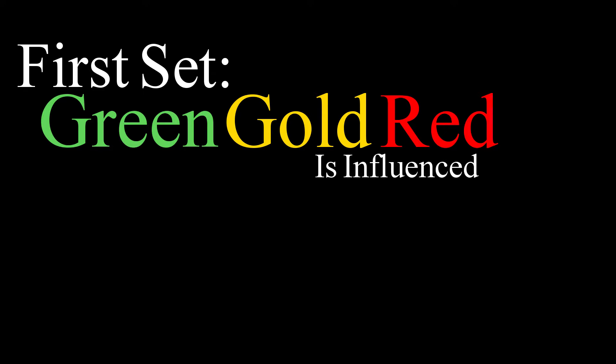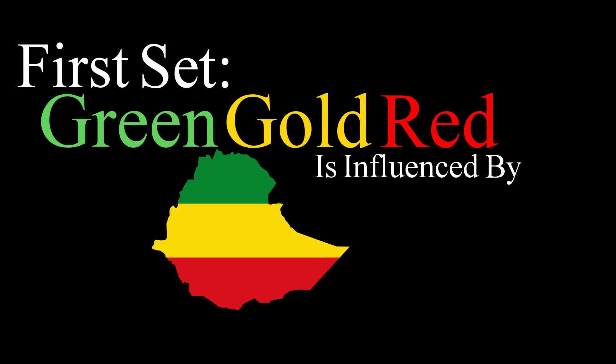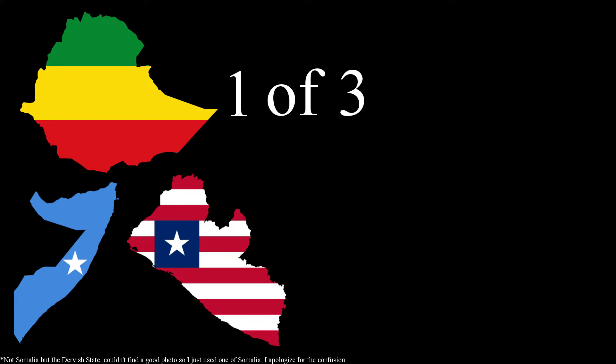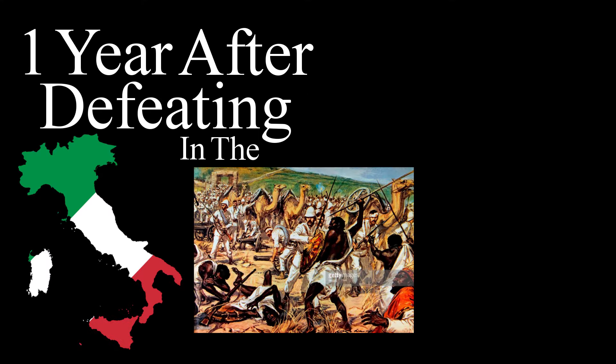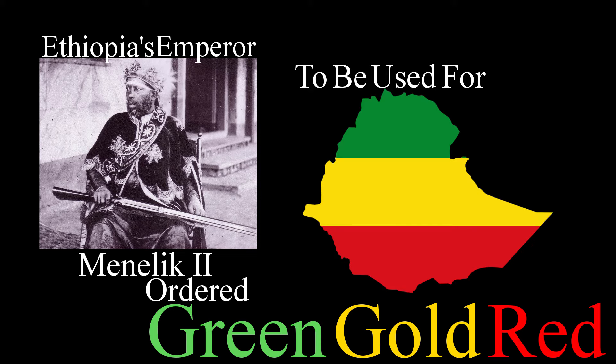The first color set mentioned is influenced by the Ethiopian flag. Ethiopia, also known as Abyssinia, was one of three African nations to survive the scramble for Africa. A year after defeating the Italians in the First Italo-Ethiopian War, Abyssinia's emperor, Menelik II, ordered this color scheme to be used in their flag.